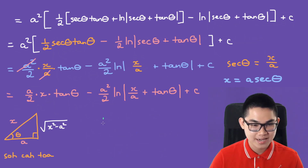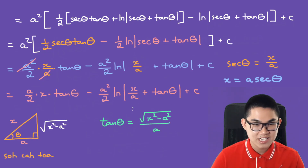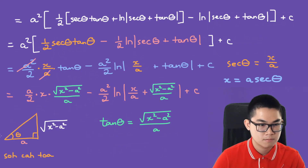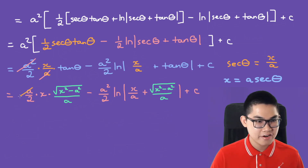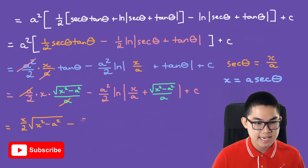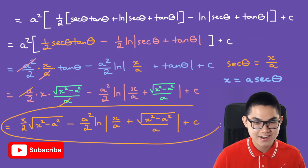Finally, we can figure out what tan is. Tan is opposite over adjacent, so tan equals the square root of x squared minus a squared over a. Replacing tan, the a cancels out, and we get x over 2 times the square root of x squared minus a squared, minus a squared over 2 times the ln of x over a plus the square root of x squared minus a squared over a, plus C. This is our answer.